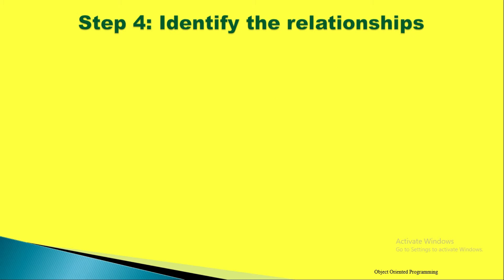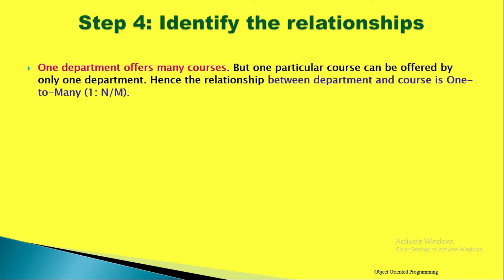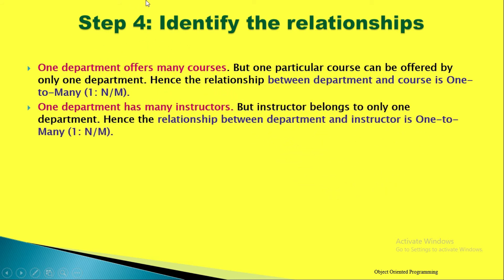Step four is the most important: we will identify the relationships between the various entities. The first relationship is one department offers many courses — that is a one-to-many relationship. The second relationship is one department has many instructors, so the relationship will be one-to-many.